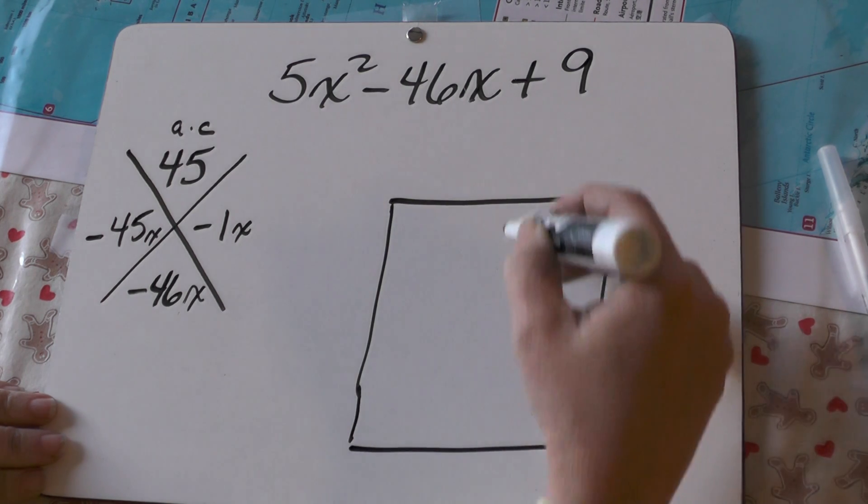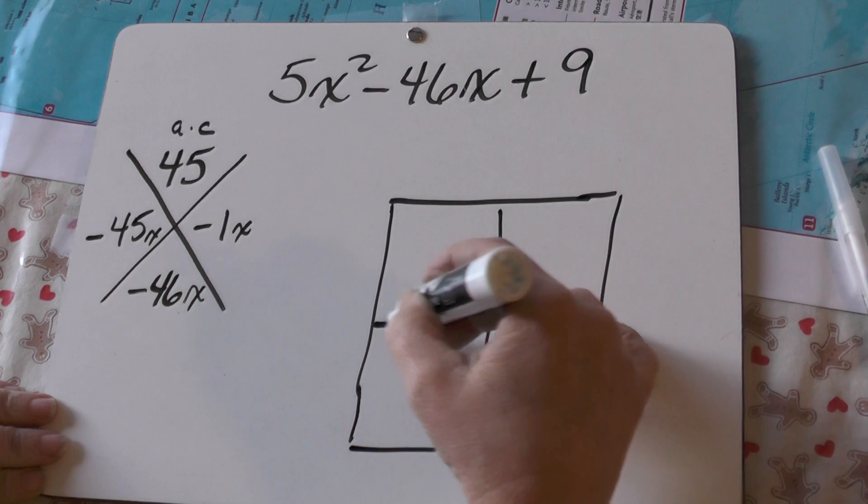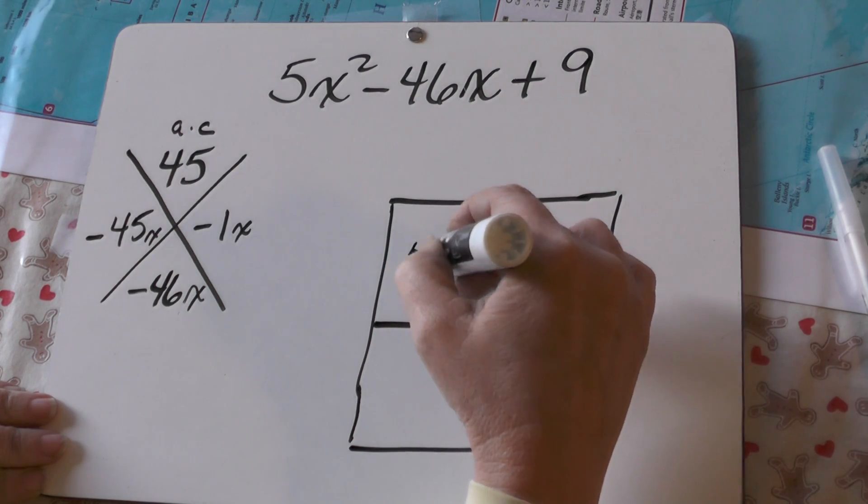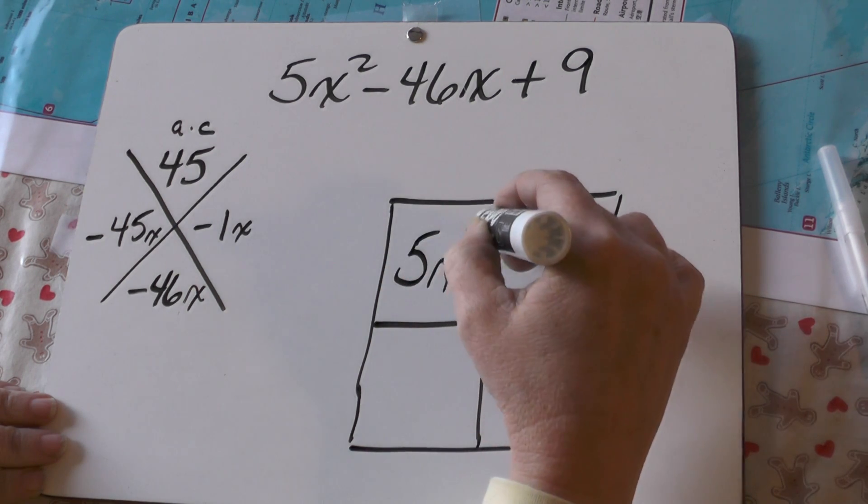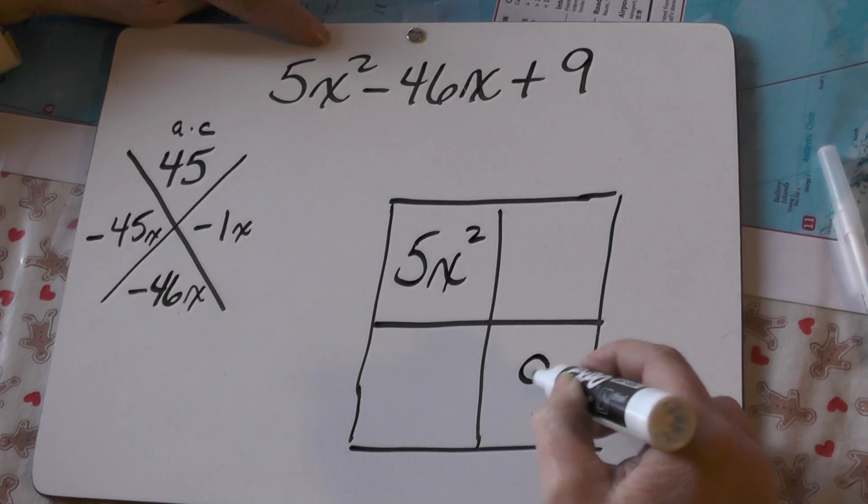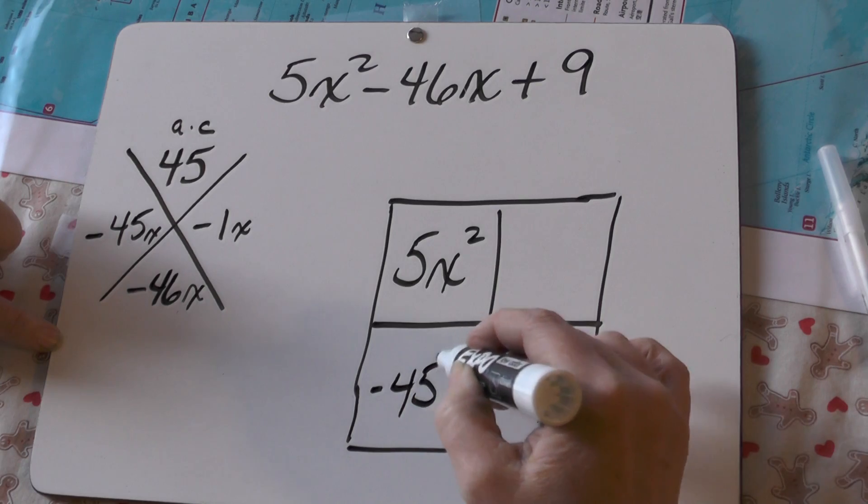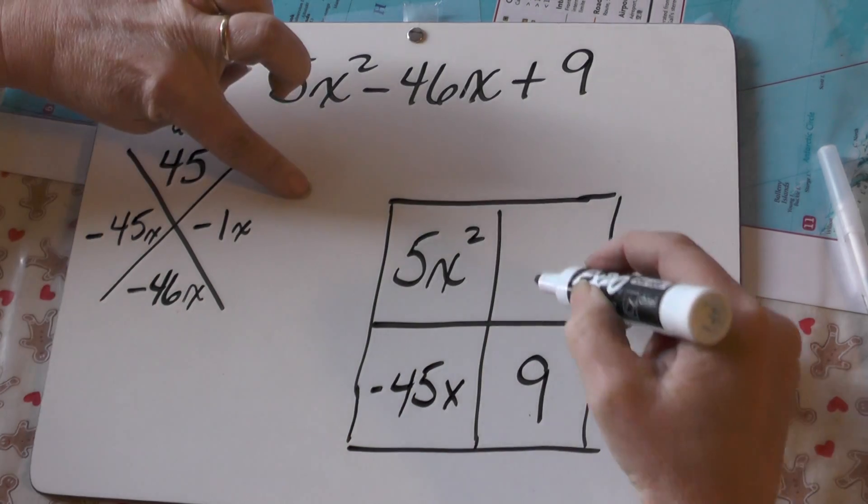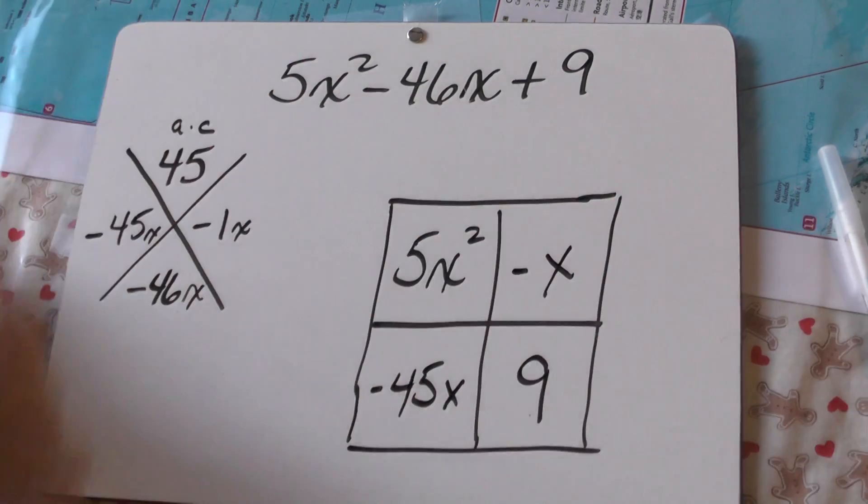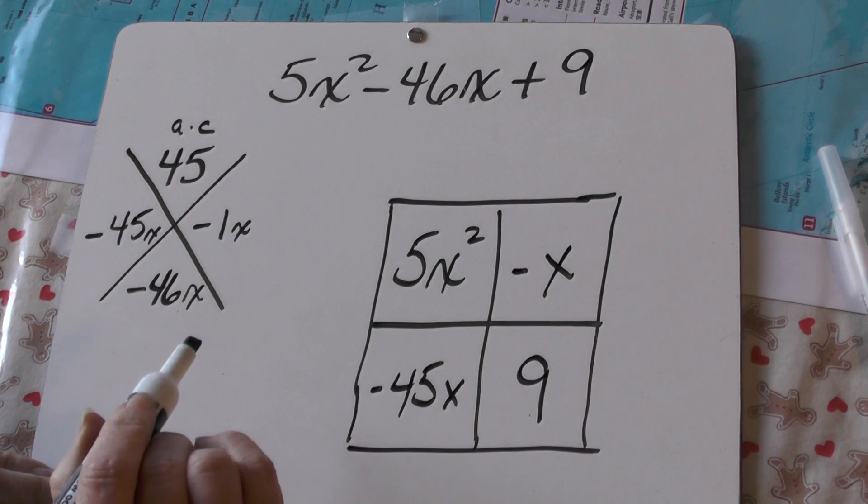So, now, we drop this in our grid. Because we now have all our inside terms. We're just going to work outwards. 5x squared. 9. And, now, I know that this has to be negative 45x. And, this has to be negative x. And, now, I just pull out factors.